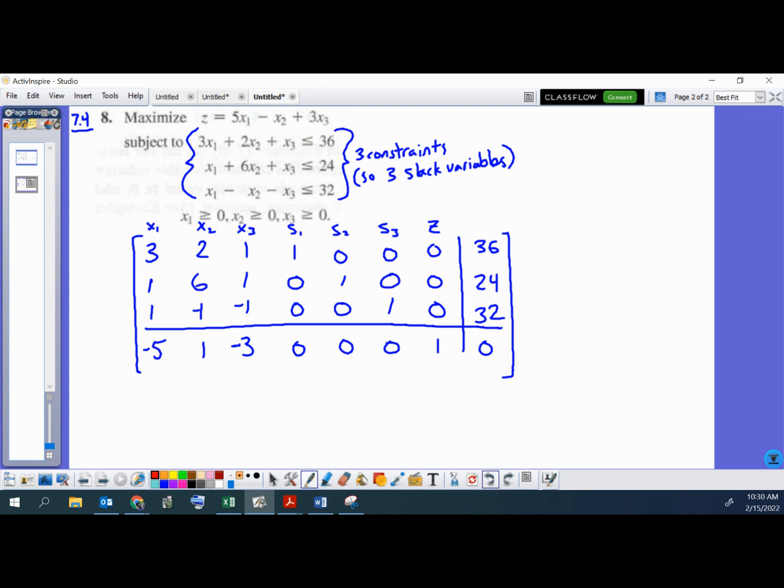So the whole point of the slack variable is to make up the rest. What I mean by that is if you just look at this part, 3x1 plus 2x2 plus 1x3, that has to be less than or equal to 36, right? So if it's equal to 36, that's fine. That's an equation, right? But if it's less than 36, what about the rest? And that's what the slack variable is for. That's the rest. So if 3x1 plus 2x2 plus 1x3, if that added up to, let's say, 30 in a solution that we find, then s1 is the other six, right? And again, the three variables, x1, x2, x3, and also the three slack variables, none of those can be negative.